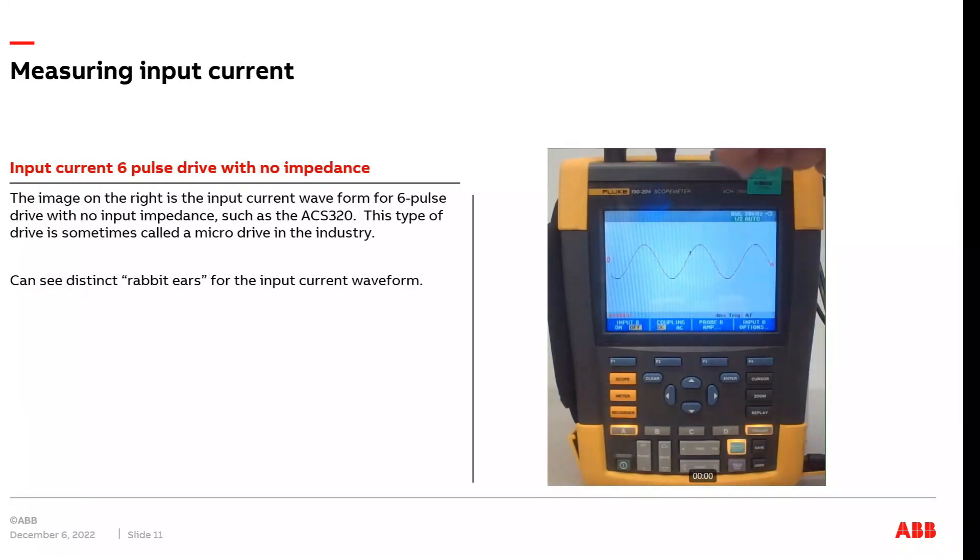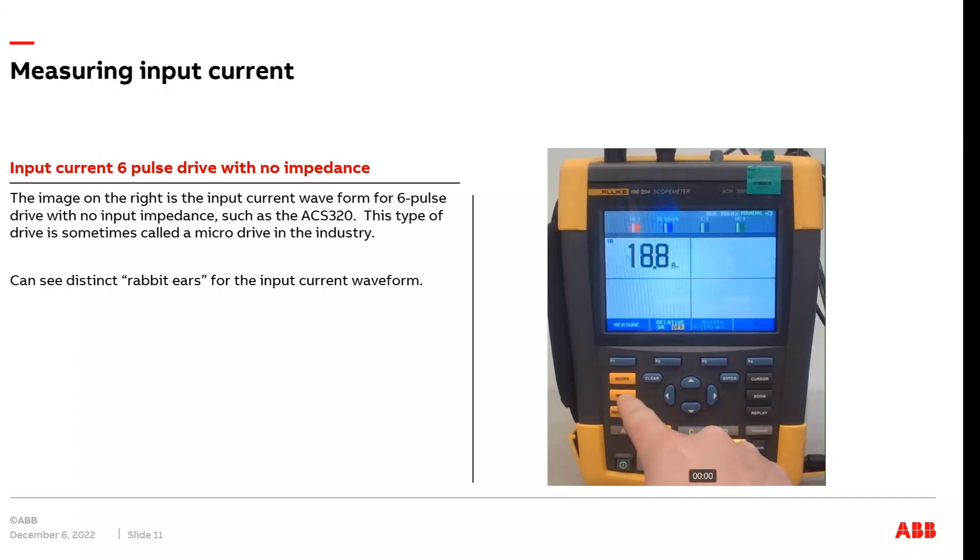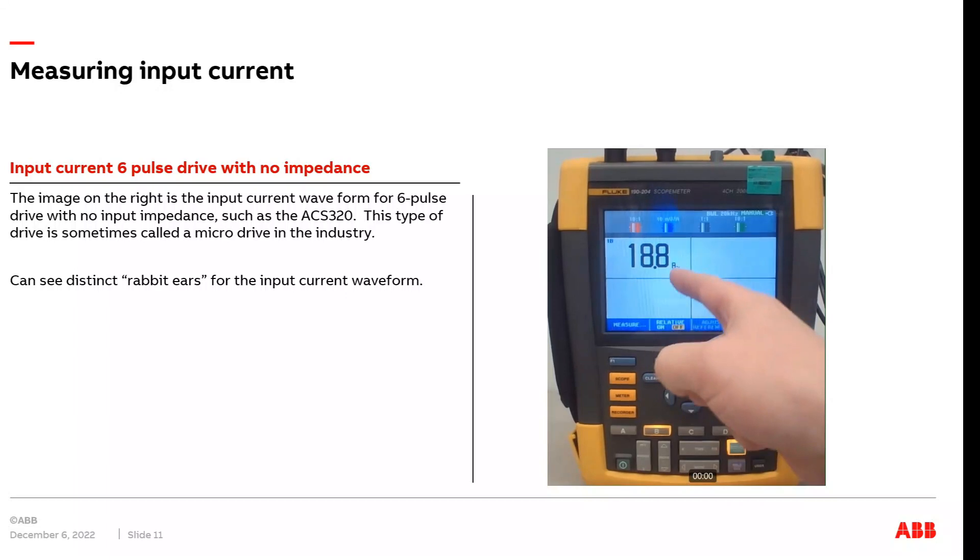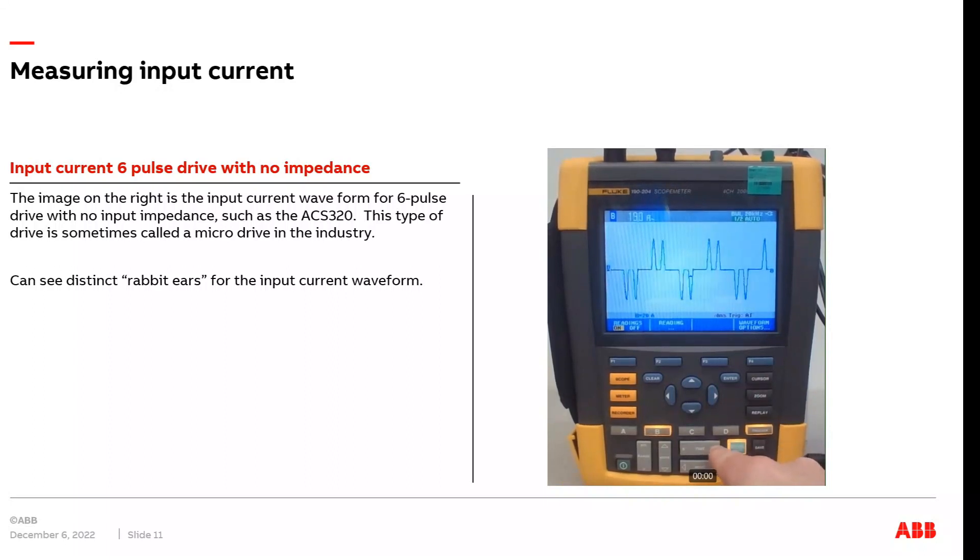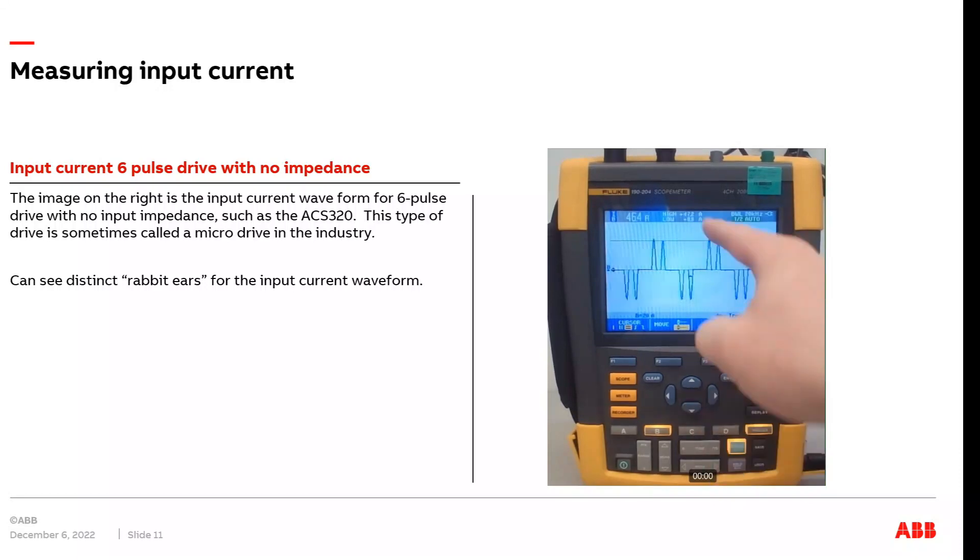Now I want to move on and show you what the input current to a VFD looks like. We're first going to start out with a micro drive. This is an ACS320 drive with no input impedance. What I'm doing here is I select channel B, activate that because that says my input current probe is connected to, and then I deactivate channel A. As you can see here on the screen, I have the classic rabbit ears, a VFD with no input impedance. If I select meter, I can set up the meter for amps, and I can see that my RMS amps is 18.8 amps coming in. Now, if I select cursors here, after I increase the time base, I can actually measure the peak current. Now, you've got to remember that the peak current will be quite high on a drive with no input impedance. And in this case, it's around 46.4 amps is the peak current.